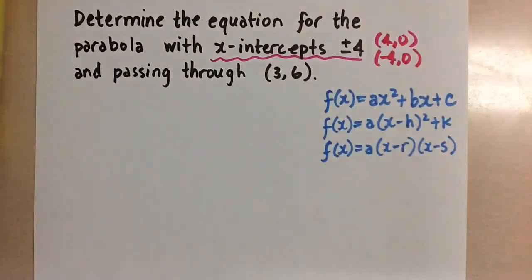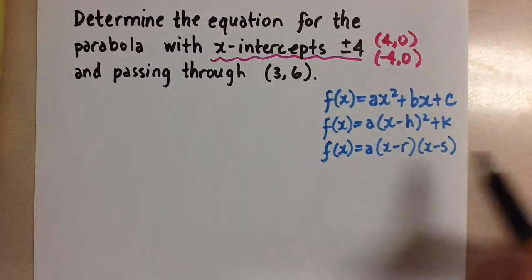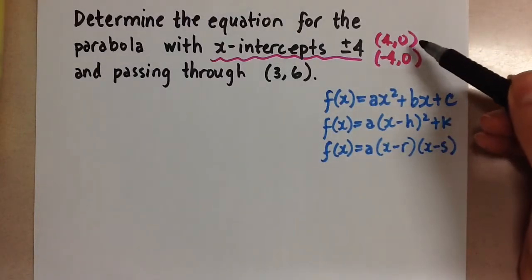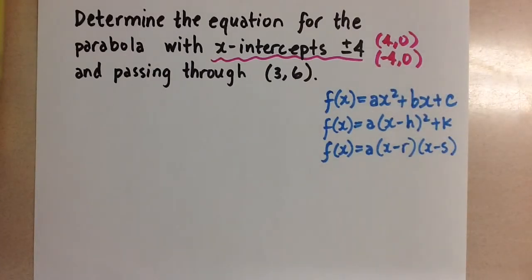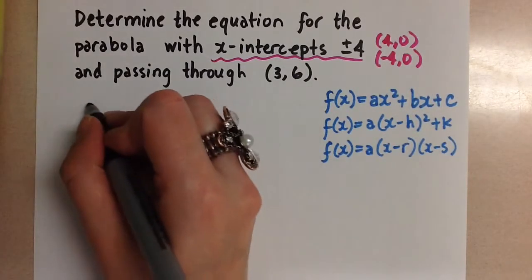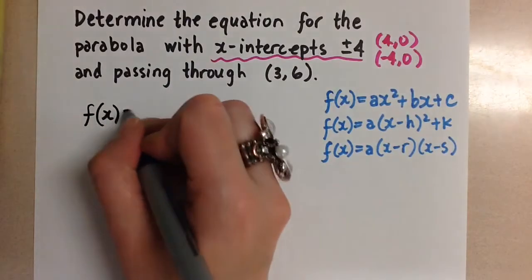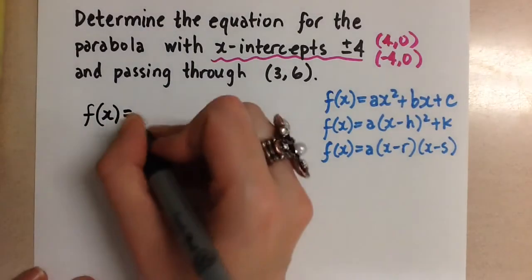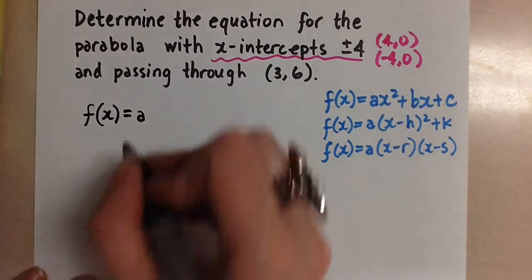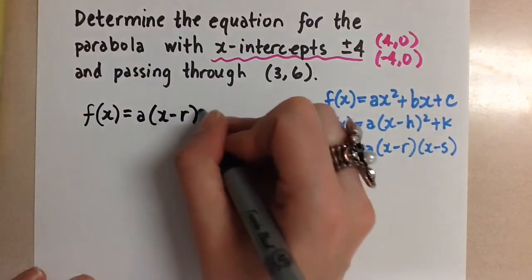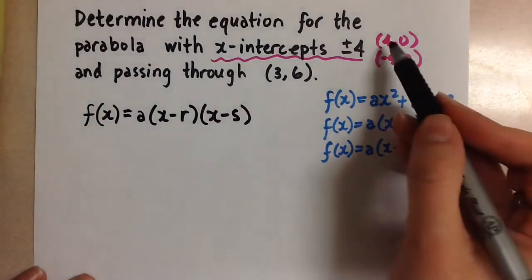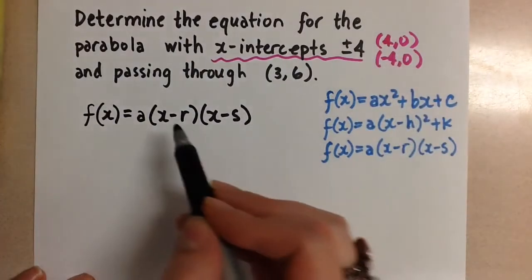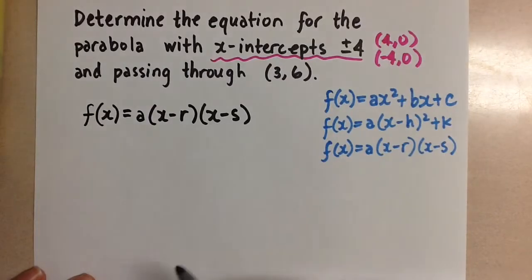So we're going to choose to use the factored form and sub in the values for the two zeros that we were given in the problem. So we're going to go ahead and do that over here. So we're going to start with the general form for the equation of a parabola in factored form. We know that the two zeros are at 4 and negative 4, so we're going to sub in 4 and negative 4 for r and s in this equation.